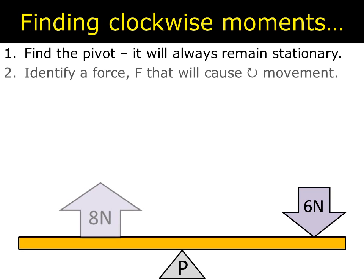The second thing is to identify a force that will cause a movement in that direction. So in this case clockwise. If you follow the path that the minute hand on the clock takes, any force that makes the object move in that direction is a clockwise moment. So here we've got 8 newtons as a clockwise moment and the 6 newtons. Both of them are clockwise moments.